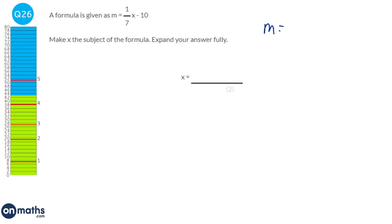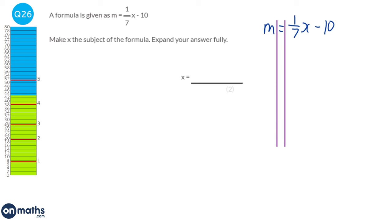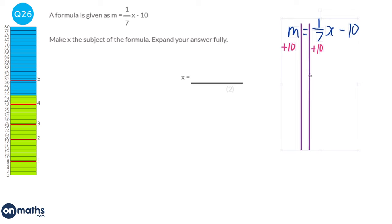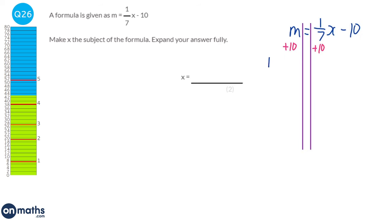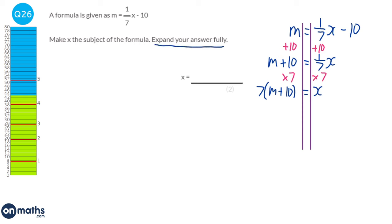Writing out the equation and putting in solving lines, we're asked to make x the subject. First, add 10 to both sides, leaving m plus 10 on the left and one-seventh x on the right. To get rid of the one-seventh, multiply both sides by 7, giving 7(m + 10) equals x. Expanding the brackets fully: x equals 7m plus 70.